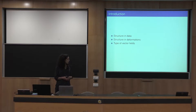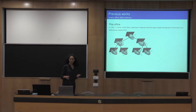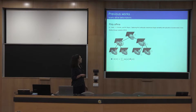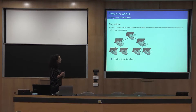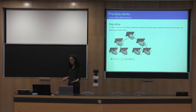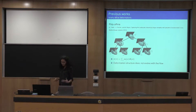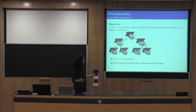Different types of structure in deformations have been used in previous works. In the polyaffine frameworks, the vector field is constrained to be a sum of affine transformations, each one acting in a particular area of a particular size. These areas are not transported by the flow of vector fields, so the deformation structure is imposed but it doesn't evolve with the flow while shapes are transported by the flow. This may be a problem for very large deformations.